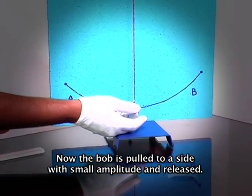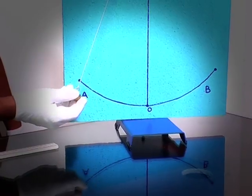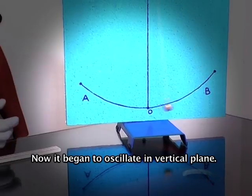Now the bob is pulled to a side with small amplitude and released. Now it began to oscillate in vertical plane.